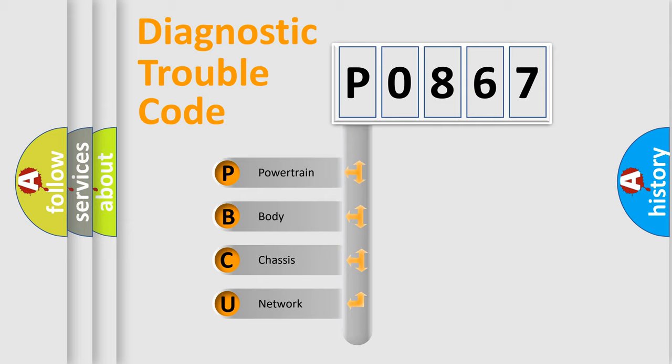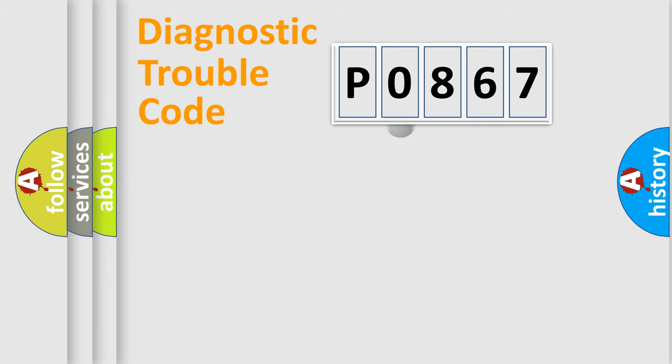We divide the electric system of automobile into four basic units: Powertrain, Body, Chassis, and Network. This distribution is defined in the first character code.